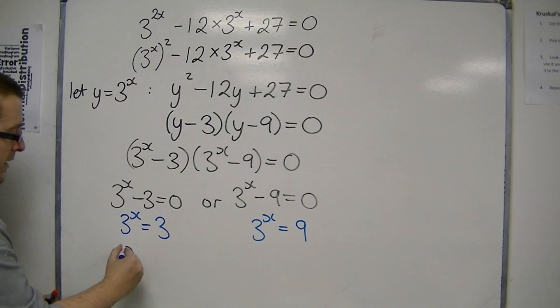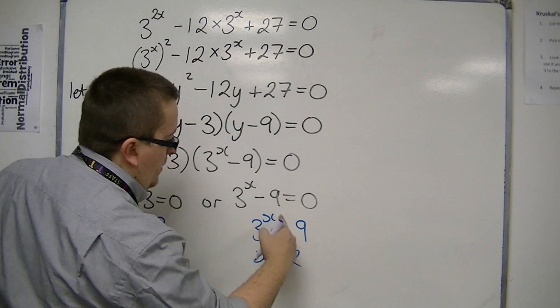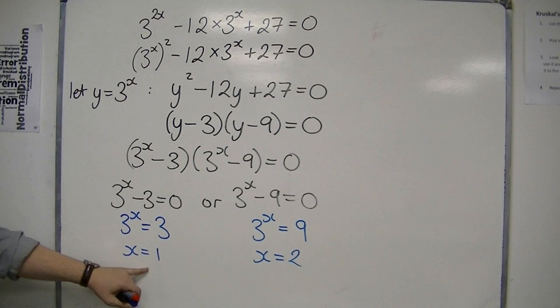Which would mean that x equals 1, because 3 to the 1 is 3, or x is 2, because 3 squared is 9. And so x equals 1 and x equals 2 are the two solutions to the original problem.